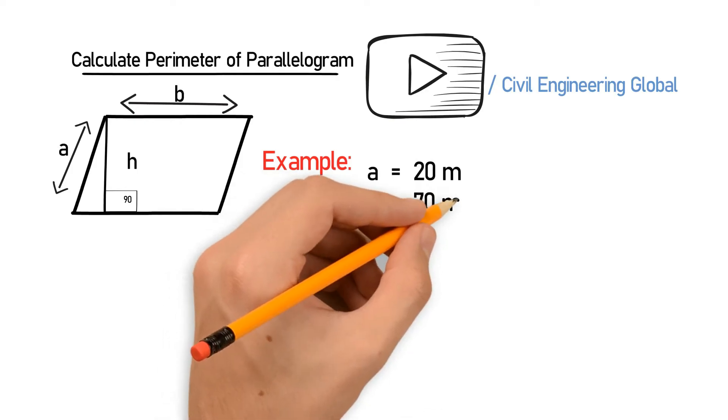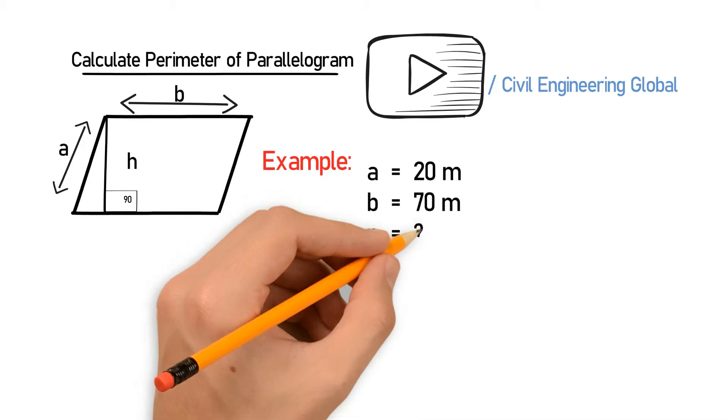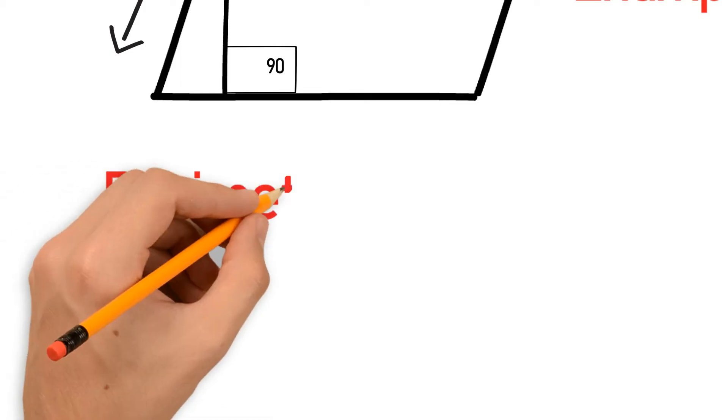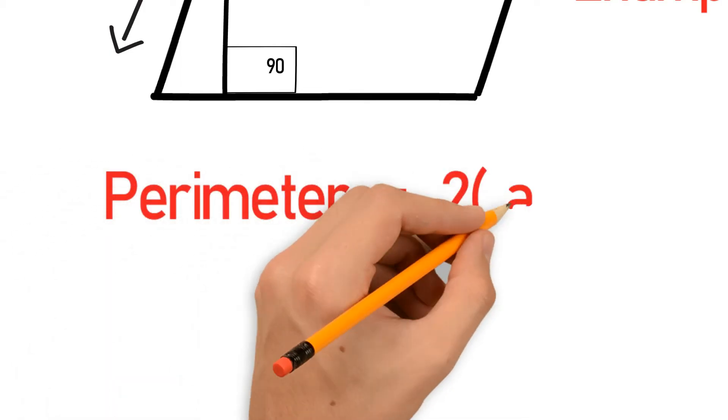P is equal to unknown. P is the parameter, so to find the parameter we have the formula: P is equal to 2 multiplied by a plus b.